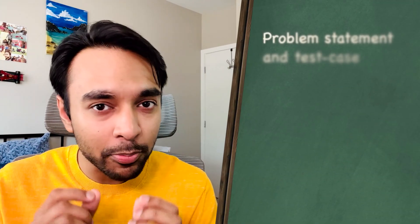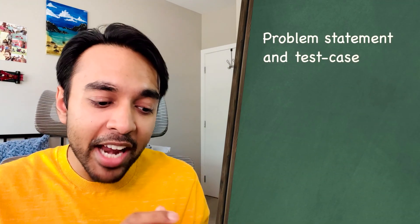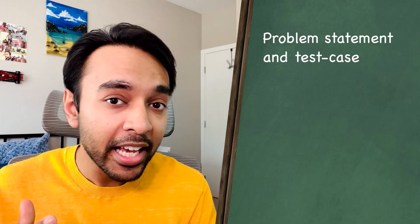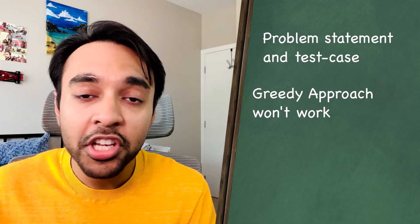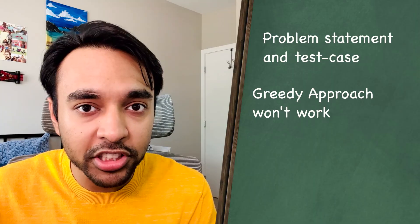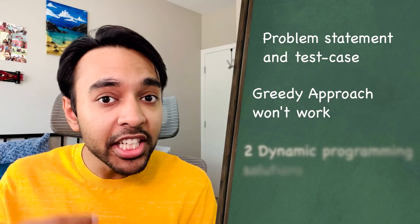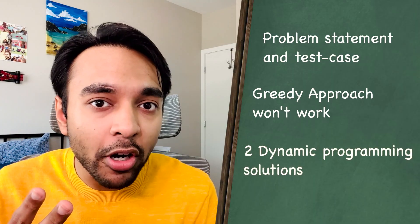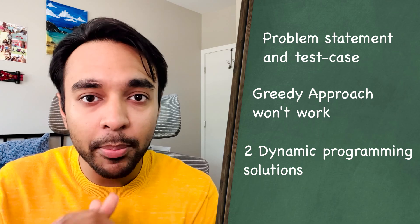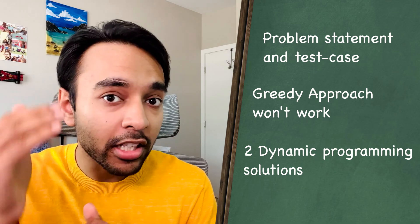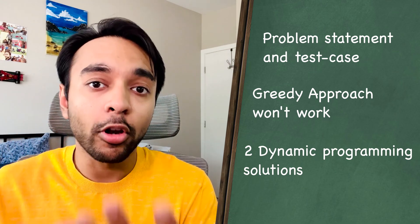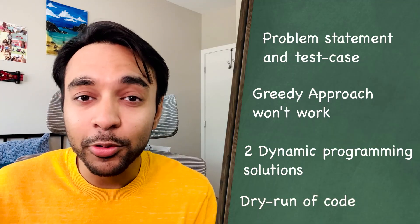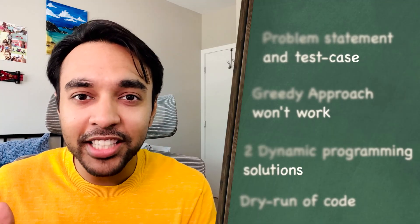First, I will explain the problem statement and we will look at the sample test case. Next we will see why a greedy algorithmic approach won't work for this problem. Then we will see two types of solutions using the dynamic programming algorithm — the top-down approach and the bottom-up approach. We will also do a dry run of the code so that you understand how all of this actually works in action.